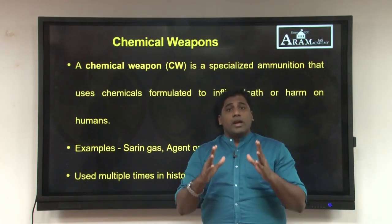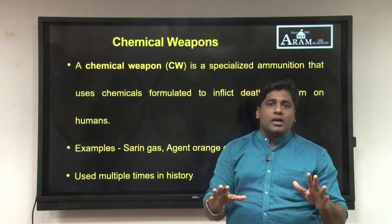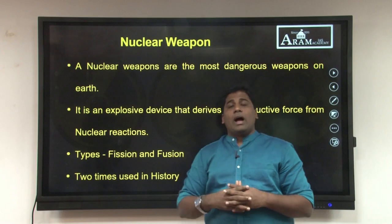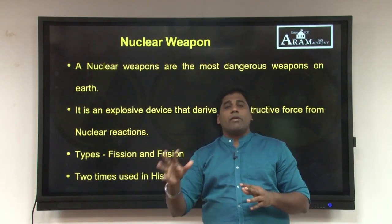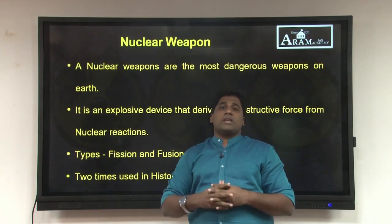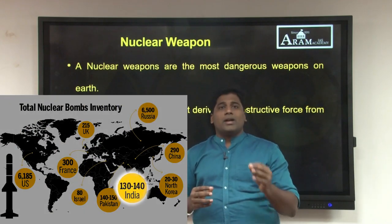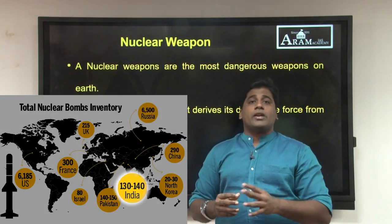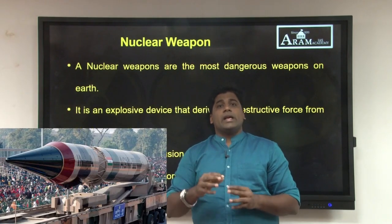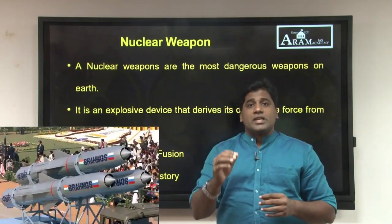India is a signatory of both the Chemical Weapon Convention and the Biological Weapon Convention. Thus, India does not stockpile, produce, or use any chemical or biological weapons. But we do have nuclear weapons. According to the Stockholm International Peace Research Institute, India may have 130 to 140 plutonium-based nuclear weapons, which means India is not part of any nuclear disarmament treaty.